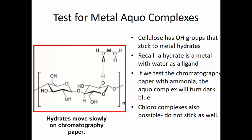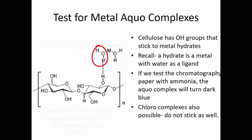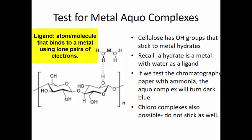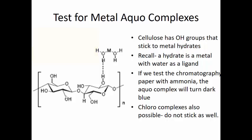A hydrate is a metal with water bound to it as a ligand. A ligand is just a complicated word for water or any other molecule that's bound to a metal using a pair of electrons. And if we test this chromatography paper with ammonia, any hydrate is going to turn dark blue.